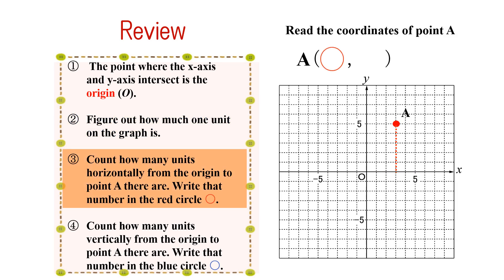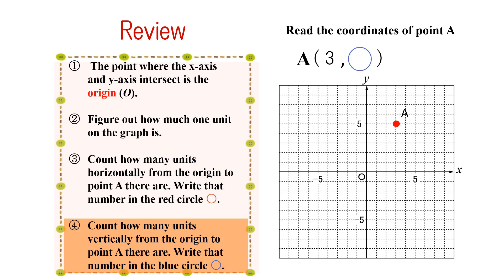When reading the coordinates of point A in the figure on the right, draw a perpendicular line to the axis from point A and count how many units out it is from the origin. Write that number in the red circle. Then, count how many units from the x-axis to point A there are. Write that number in the blue circle. From doing that, we know that the coordinates of point A are 3, 5.